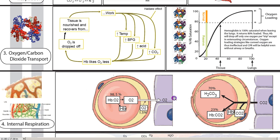Internal respiration also mirrors external respiration in matching oxygen in the blood with oxygen in the tissue. If there's low oxygen in the tissue, the vessel dilates to bring more blood; if there's high oxygen, the vessel constricts or the precapillary sphincter may close to redirect blood elsewhere. Notably, about 98.5% of oxygen in the red blood cell is carried on hemoglobin, while about 1.5% is free O2 dissolved in the plasma.